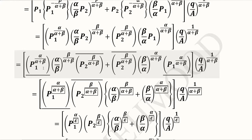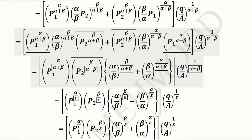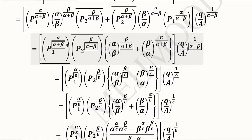Now we can observe that certain terms before and after the plus sign are common, so they are underlined. We can take them as common — the overlined term and underlined term are both taken as common — and the remaining terms are left with the plus sign as before. In the next step, we put α + β into a box everywhere it appears, because we know α + β equals the elasticity of scale ε. So the elasticity of scale is appearing in all of those places.